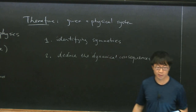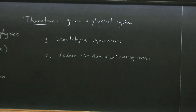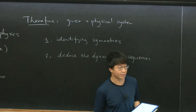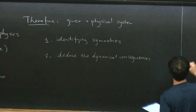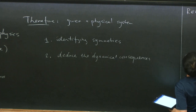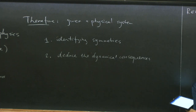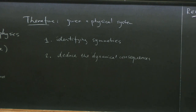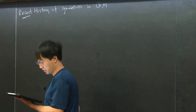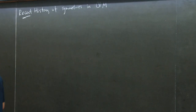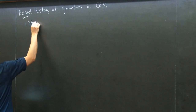Now I've said some nice things about symmetry and how we use it to constrain physical systems. Let's review a brief history of the success of symmetry — specifically the recent history of symmetries in quantum mechanical models. The first item in this historical list is not so recent; it's from the 1930s.